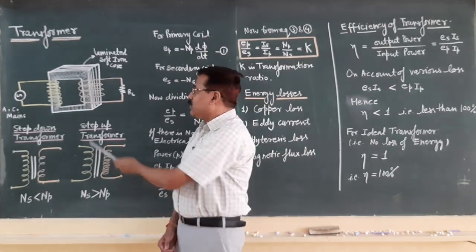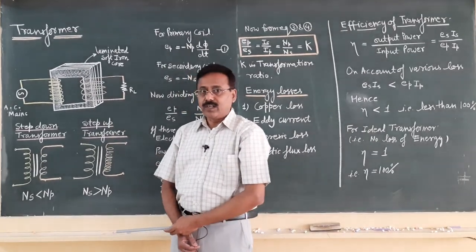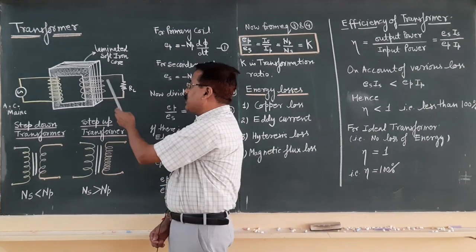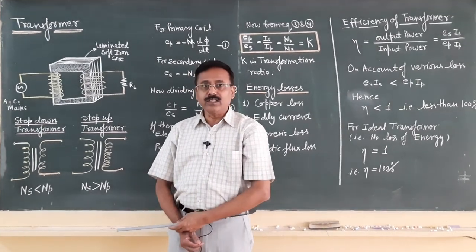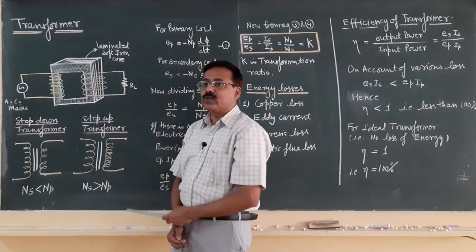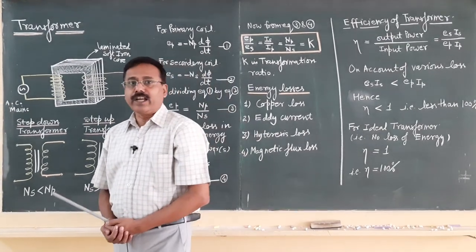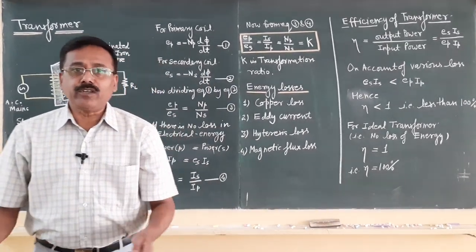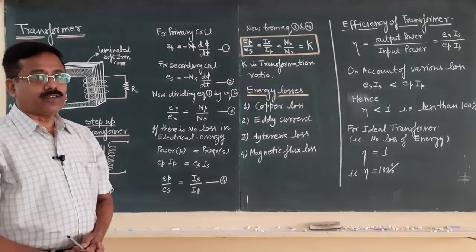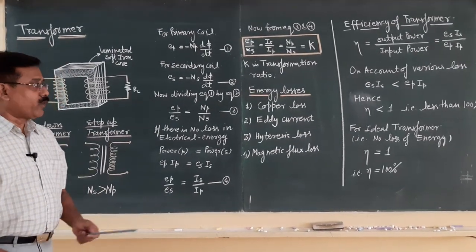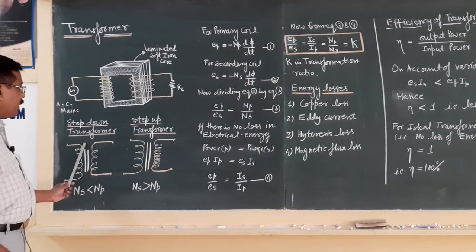Due to the continuous change in the magnetic flux, an induced EMF is set up across the terminals of the load, and accordingly the induced current flows in the secondary coil. We have two options for the transformer: one option is the step-down transformer.